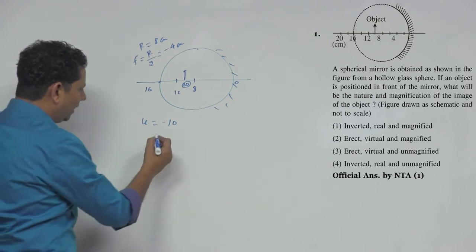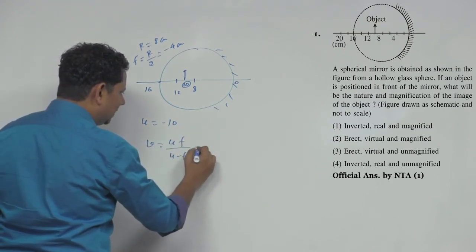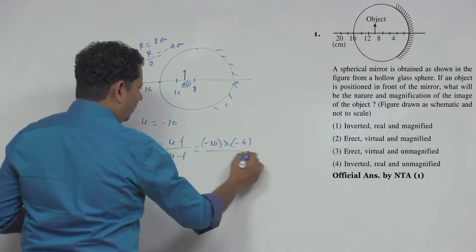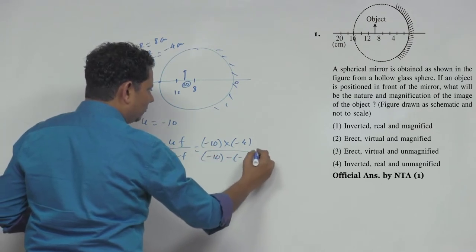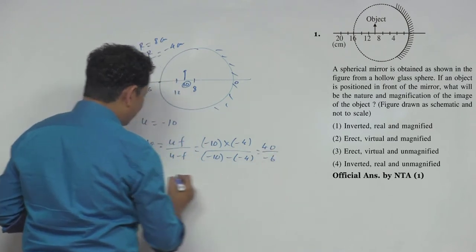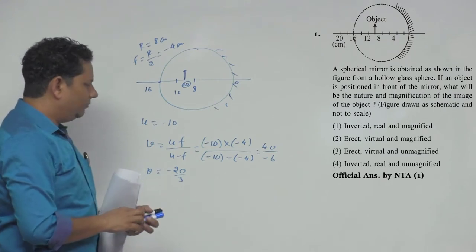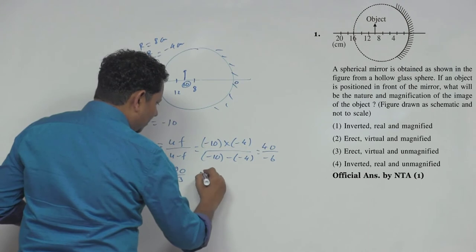v will be equal to uf divided by u minus f. u ki value हमने रखी minus 10 multiplied by f हमने रखा minus 4 divided by u minus 10 और minus minus 4. When we solve this, this will be plus 40 divided by minus 6, meaning v ki value होगे minus 20 by 3. यह आपकी v ki value. Since it's negative, this means आपकी real image होएगी.